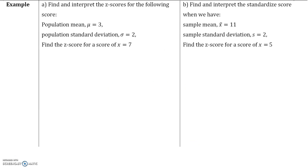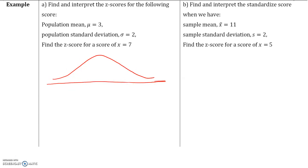Let's find and interpret the z-score for the following data. We have a population mean mu equals 3 and the standard deviation sigma equals 2. I'm going to draw a symmetric unimodal distribution with mean mu equal to 3. A standard deviation sigma equal to 2 means that if you start at the mean 3, one standard deviation is going to be 2, so if we go one standard deviation from the mean, our data value would be 5.